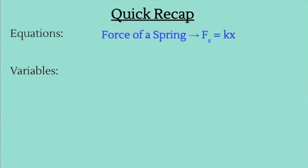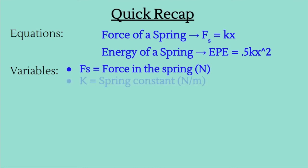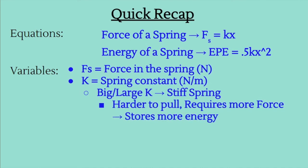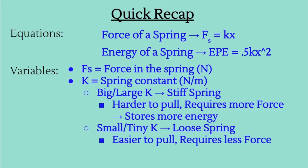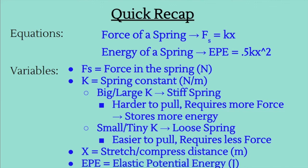To recap: the two equations are fs equals kx (force of a spring) and EPE equals 0.5kx squared (energy of a spring). fs is the force in the spring in newtons. k is the spring constant in newtons per meter — a large k means a stiff spring requiring more force and storing more energy; a small k means a loose spring requiring less force. x is the stretch or compress distance, and EPE is elastic potential energy measured in joules.